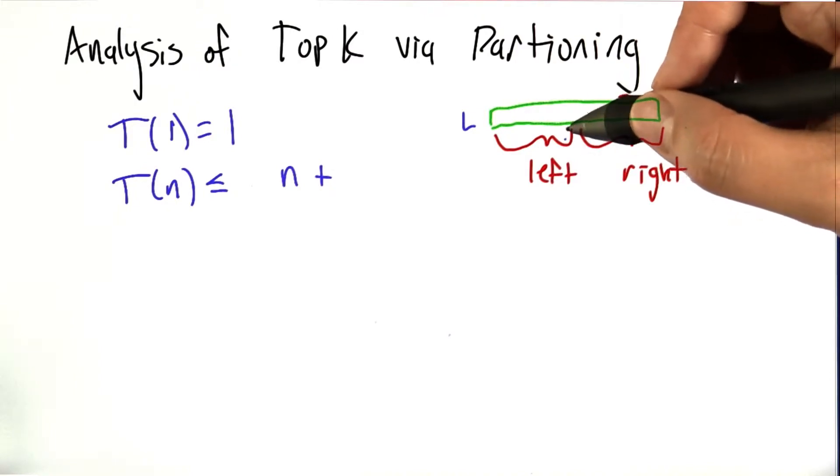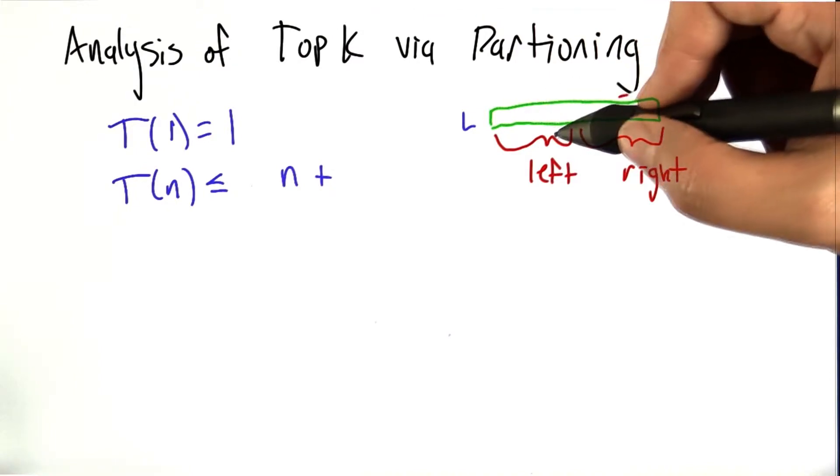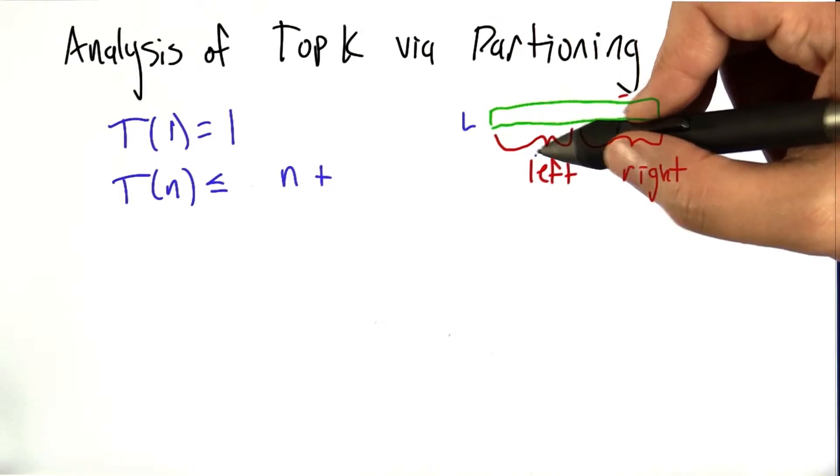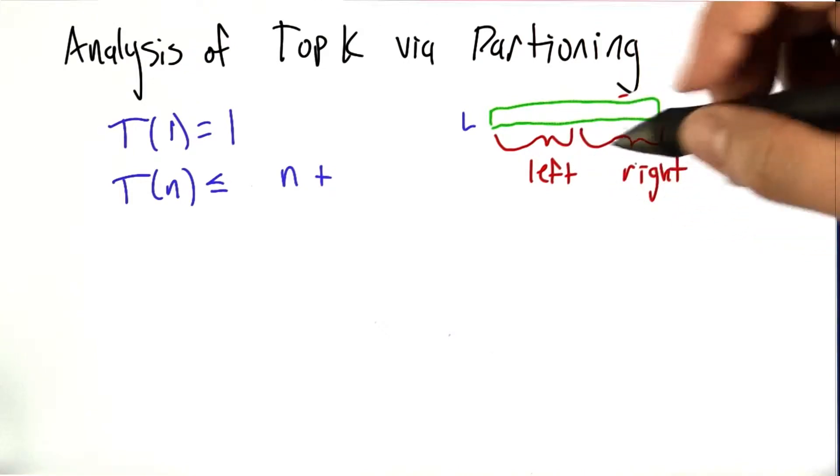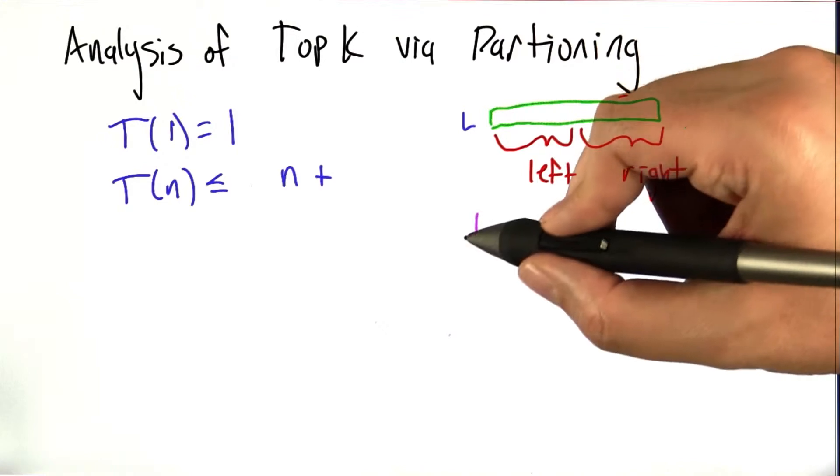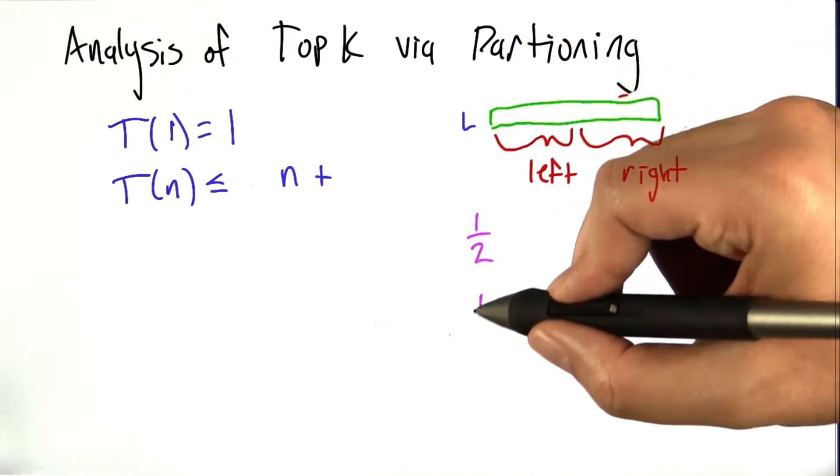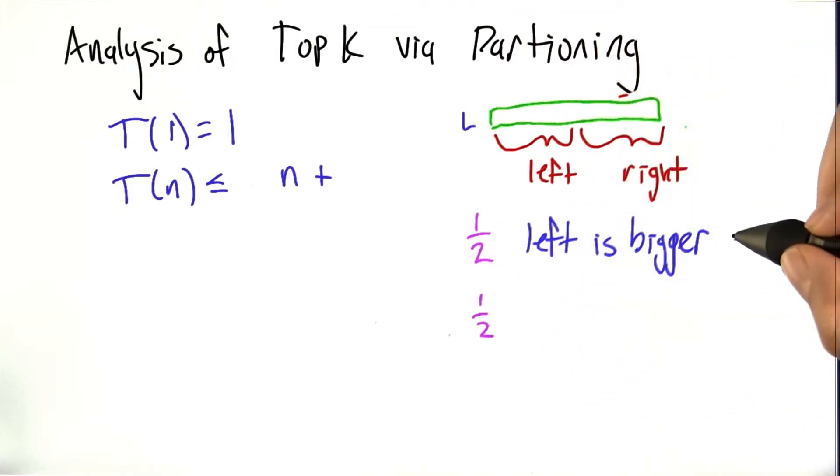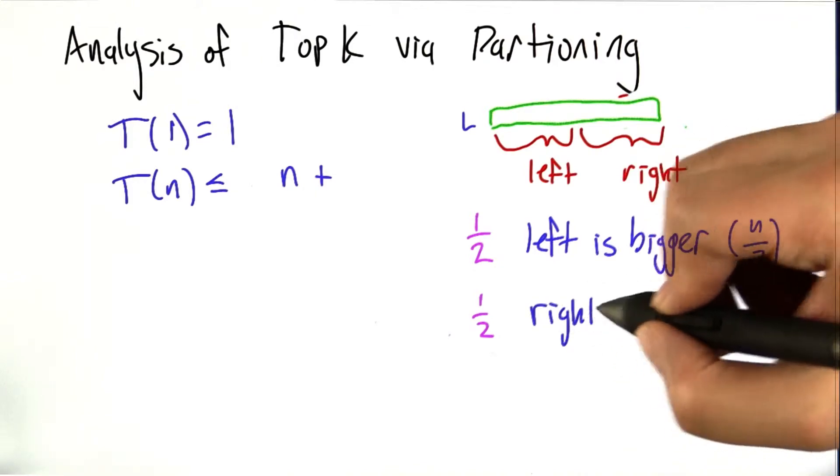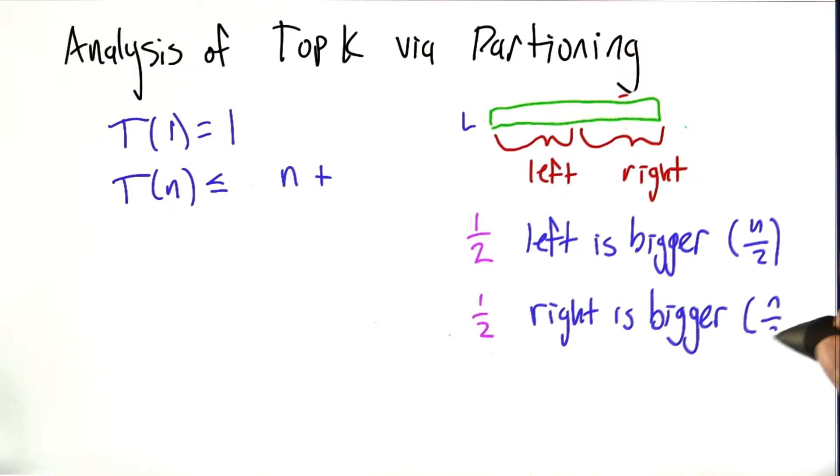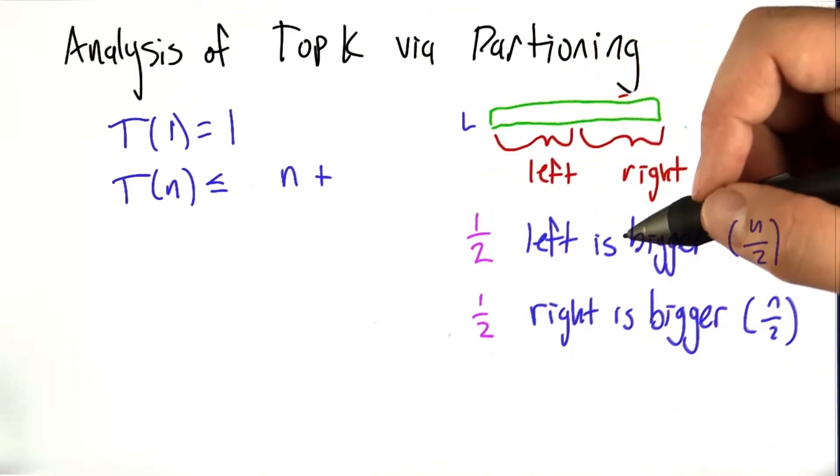So what do we know? Well, it's just as likely for the left to be bigger as it is for the right to be bigger and vice versa. So really you can imagine with justification that with probability a half, the left side is bigger. And in particular, bigger than size n over 2. And in half the cases, right is bigger. And again, bigger meaning that it's going to be at least size n over 2.